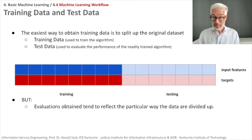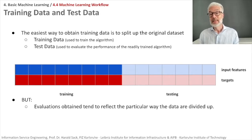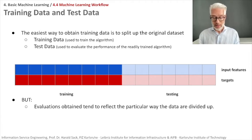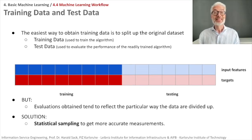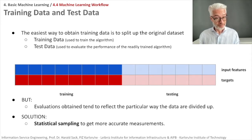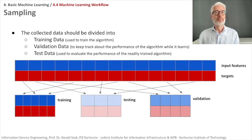This data might come from a time series or something like that, and then you would have some kind of bias already in there. So to split properly, you have to do statistical sampling, which means you choose training data and test data from the entire data set in a random manner.